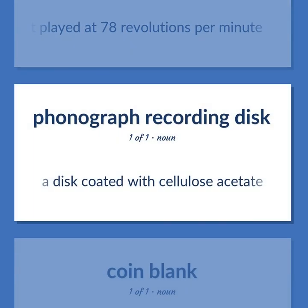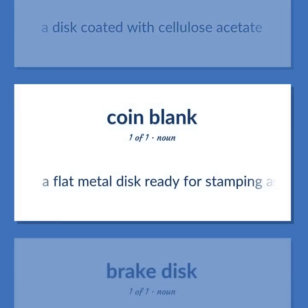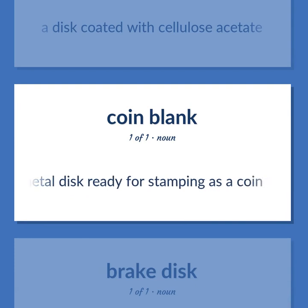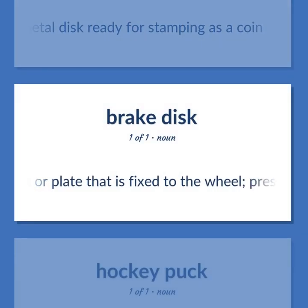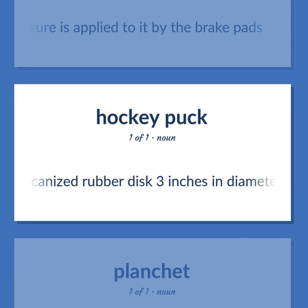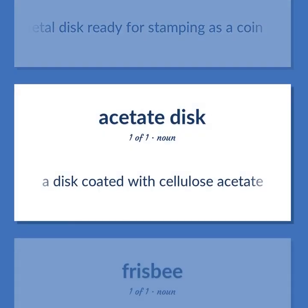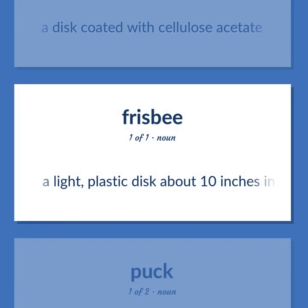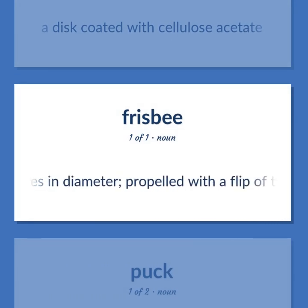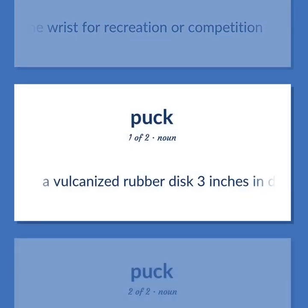A disc coated with cellulose acetate. A flat metal disc ready for stamping as a coin. A disc or plate that is fixed to the wheel; pressure is applied to it by the brake pads. A vulcanized rubber disc 3 inches in diameter that is used instead of a ball in ice hockey. A light, plastic disc about 10 inches in diameter, propelled with a flip of the wrist for recreation or competition.